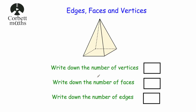We've been asked to write down the number of vertices, the number of faces, and the number of edges. Starting with vertices — the corners — we've got four at the base and one at the top, so five vertices altogether. For faces: the square base is one face, and the four triangles make two, three, four, five — so five faces altogether. For edges: four along the base and four going up to the top gives eight edges. So a square-based pyramid has five vertices, five faces, and eight edges.